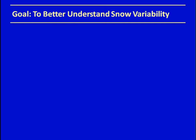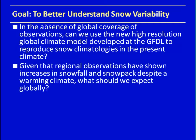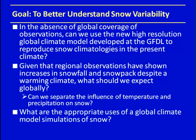Our goal is to better understand snow variability. In the absence of global observational coverage, can we use this new high-resolution GFDL global climate model to reproduce snow climatologies in the present climate? Given regional observations have shown increases in snowfall despite a warming climate, what should we expect globally? Can we separate the influence of temperature and precipitation on snow? And what are the appropriate uses of these global climate model simulations?